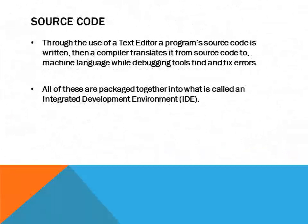Through the use of a text editor, a program's source code is created. After it's created, it goes through a compiler which translates from source code to machine code. While this is happening, debugging tools find and fix errors in the code. All of these — source code, compiler to machine code, and debugging tools — are packaged together into what is called an integrated development environment, otherwise known as an IDE. IDEs are very important when discussing development tools.